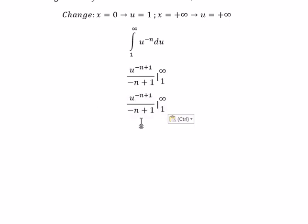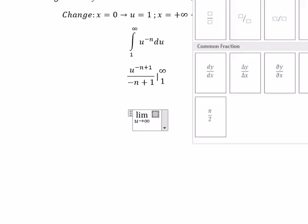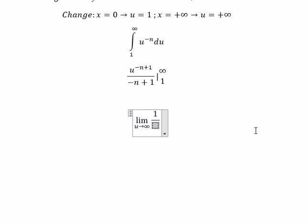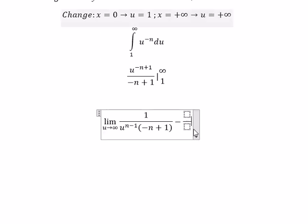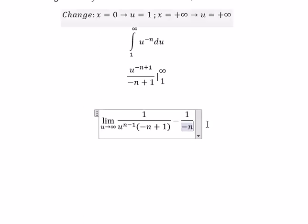For this one, we can evaluate the limit as u goes to positive infinity. So in this situation we have 1 over u to the power of n minus 1, and we have negative n plus 1 in the denominator. We have negative 1 over negative n plus 1.